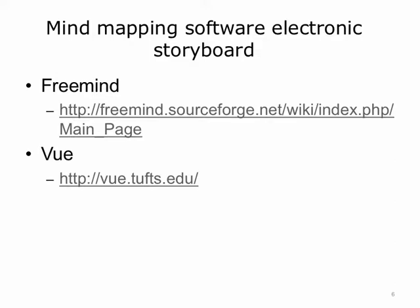An alternative to storyboarding or outlining on paper is to use mind mapping software to quickly generate your presentation ideas. It's useful if you get stuck thinking and can't see the logical sequence of the presentation. There are many free mind mapping programs you can try — these graphic brainstorming software applications will produce traditional outlines too. To get you started, you can try FreeMind at freemind.sourceforge.net or VUE at vue.tufts.edu.